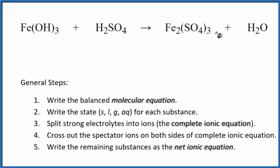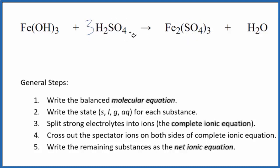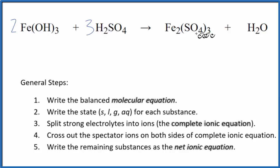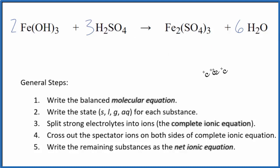This is our molecular equation. I have three sulfate ions here and only one here, so I'm just going to put a three in front of the H₂SO₄, two irons and just one here. We'll put a two, and we balance the oxygens and hydrogens. Looks like a six, and that would balance the molecular equation. If you need help, there's a link in the description for how to balance this equation.